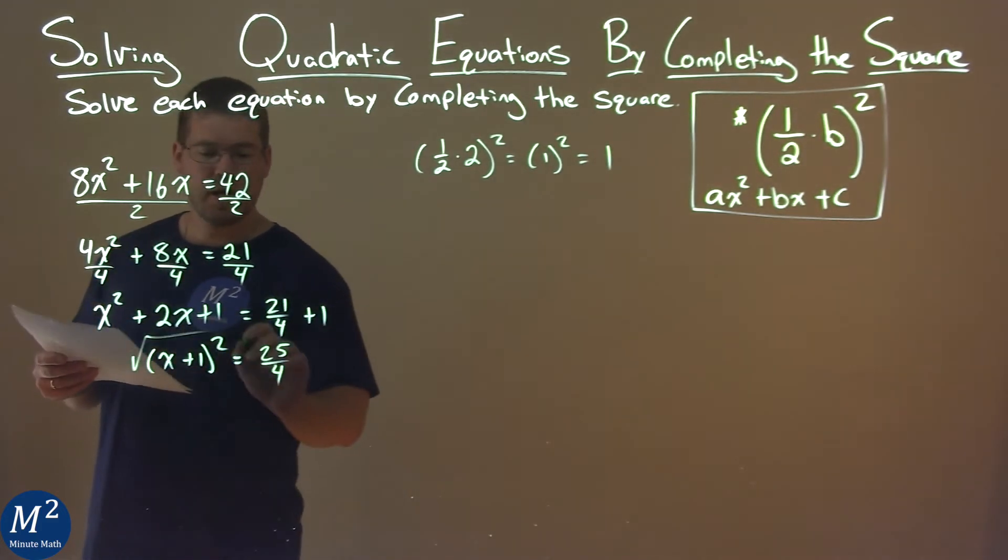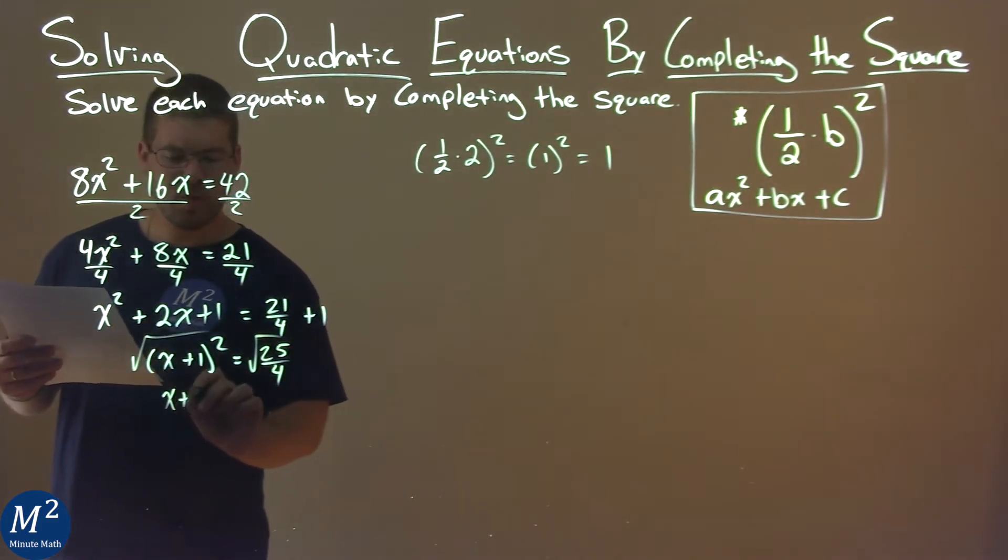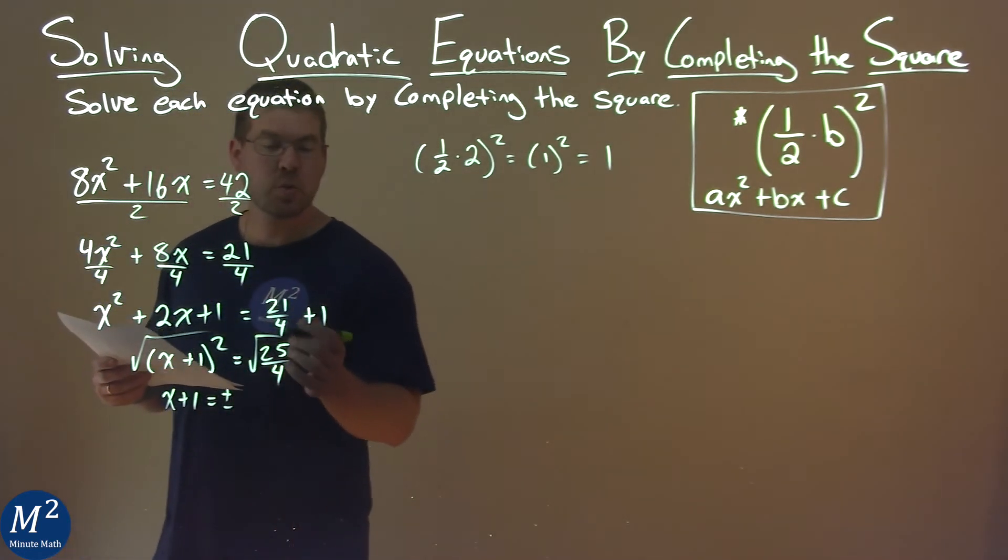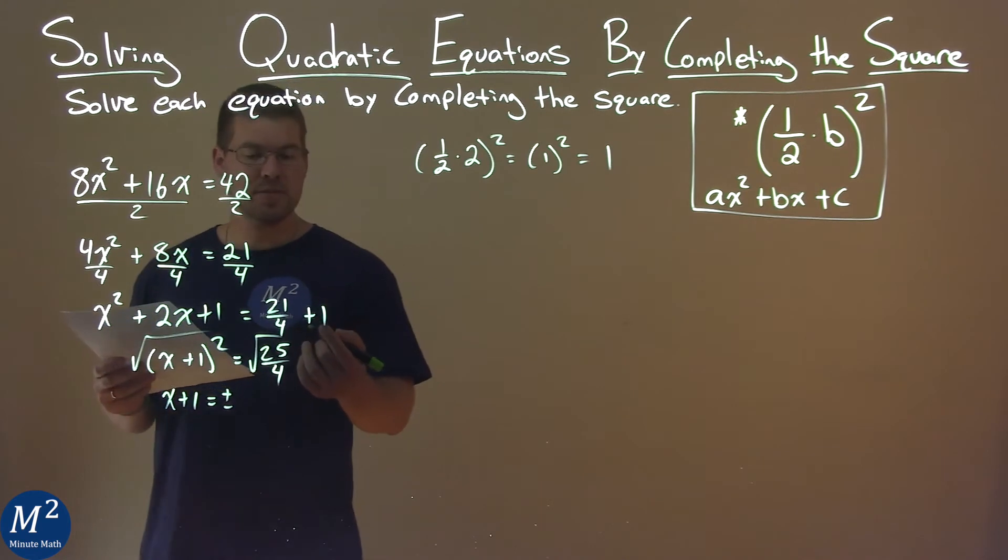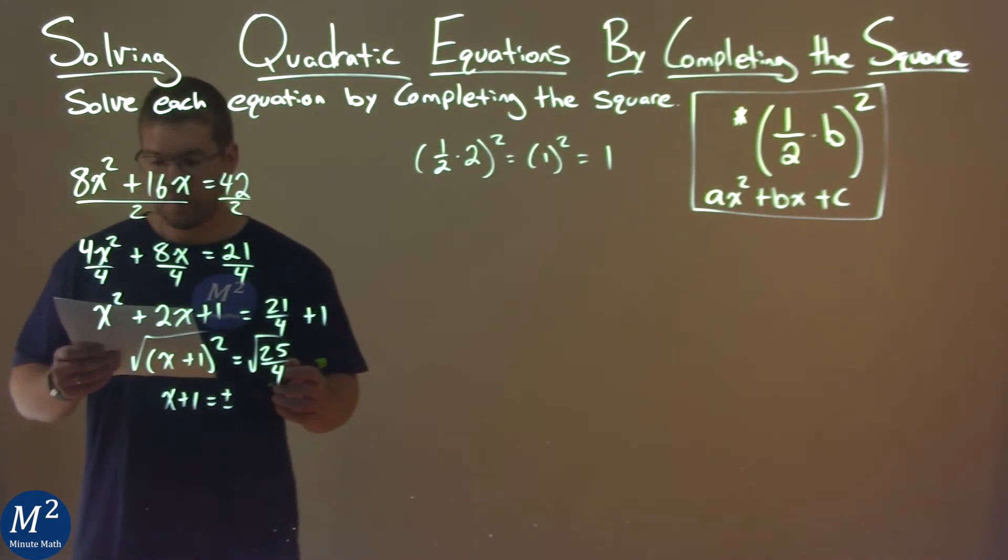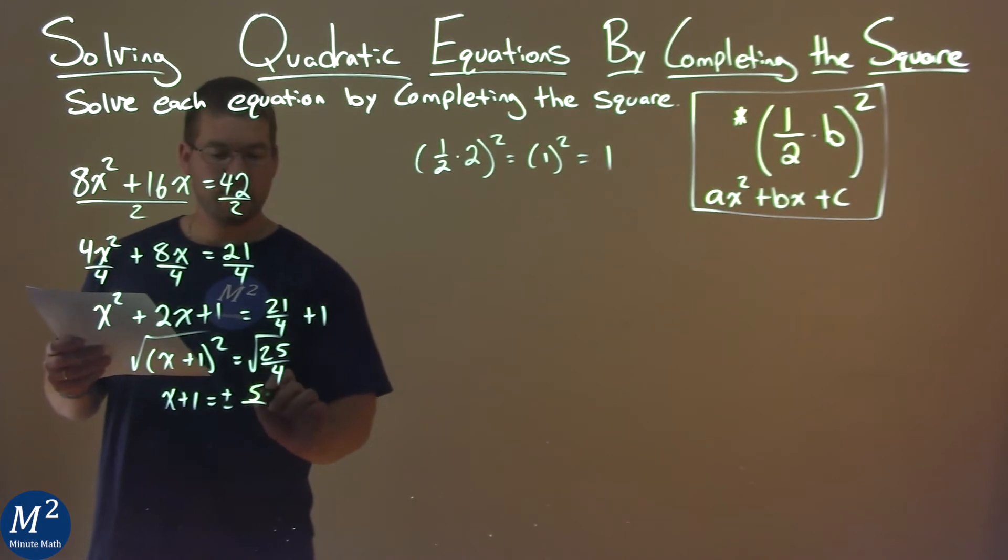We now take the square root of both sides. We have x plus 1 equals plus or minus. Now, if you remember, when taking the square root of a fraction, it's the same as the square root of the numerator and the square root of the denominator. Square root of 25 is 5, and the square root of 4 is 2.